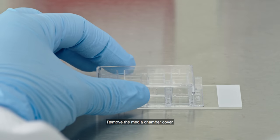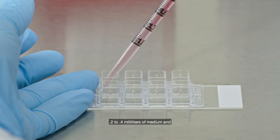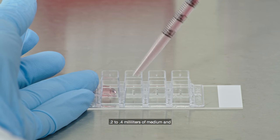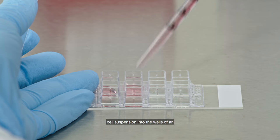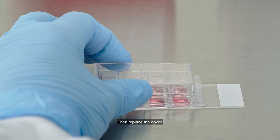Remove the media chamber cover. Using a serological pipette, fill the chamber with 0.2 to 0.4 milliliters of medium and cell suspension into the wells of an eight-well chamber slide. Then replace the cover.